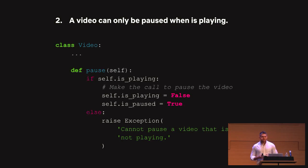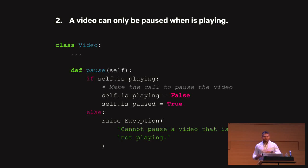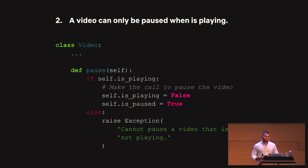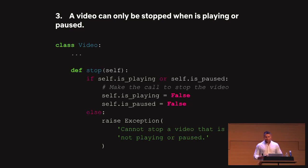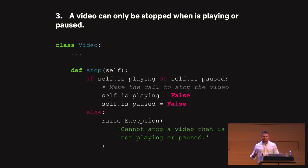For rule number two — a video can only be paused when it's playing — we check if the video is already playing, make the call to pause the video, update our flags. Otherwise, we raise an exception saying we cannot pause a video that is not playing. And for rule number three — a video can only be stopped when it's playing or paused — we check if the video is playing or paused, make the call to stop the video, update our flags. Otherwise, we raise an exception.